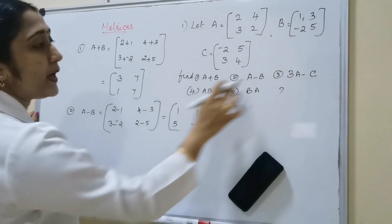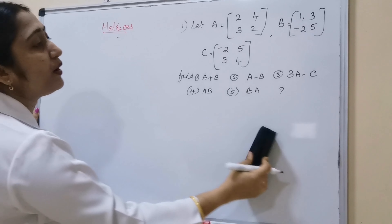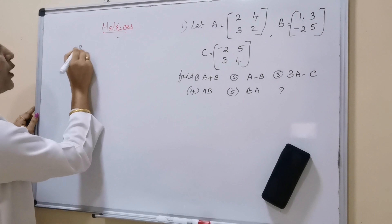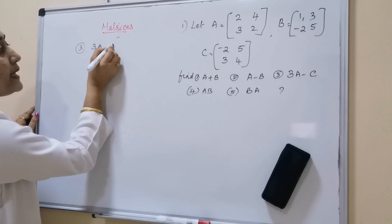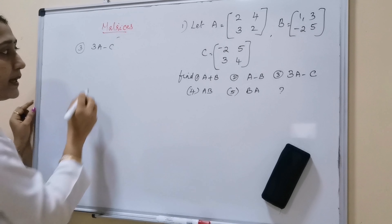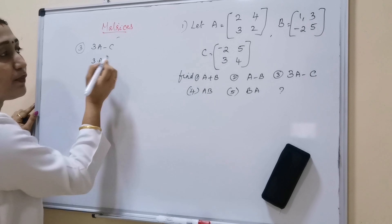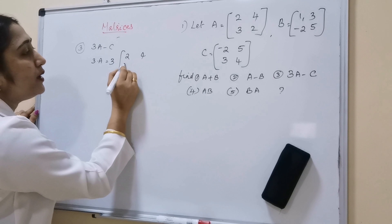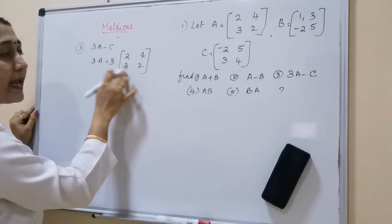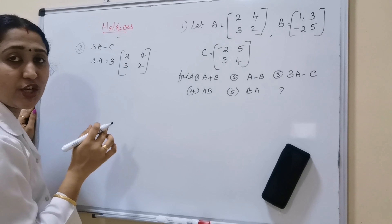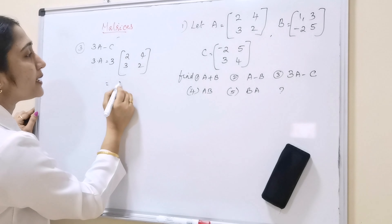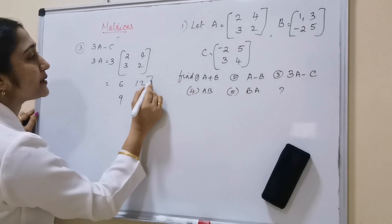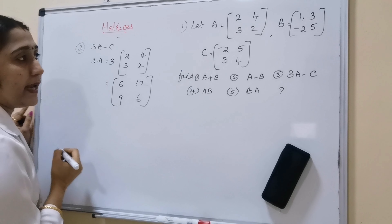Next we have to find 3A minus C. First of all we have to multiply by 3. That is scalar multiplication: 3 into [2, 4; 3, 2]. So 3 times 2 is 6, 3 times 4 is 12, 3 times 3 is 9, 3 times 2 is 6. So 3A equals [6, 12; 9, 6].